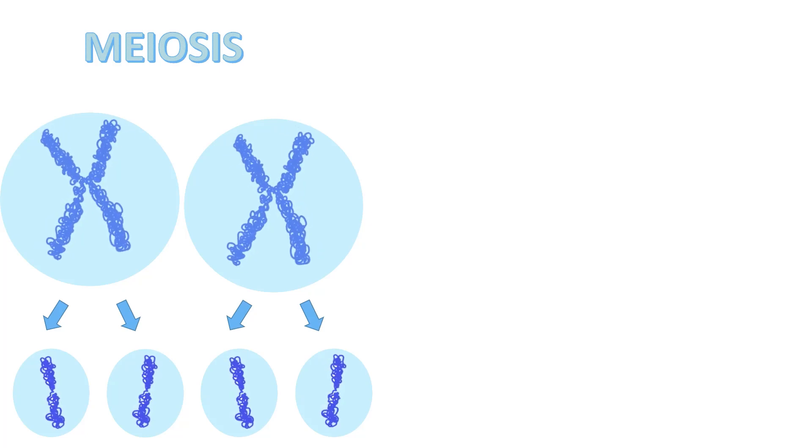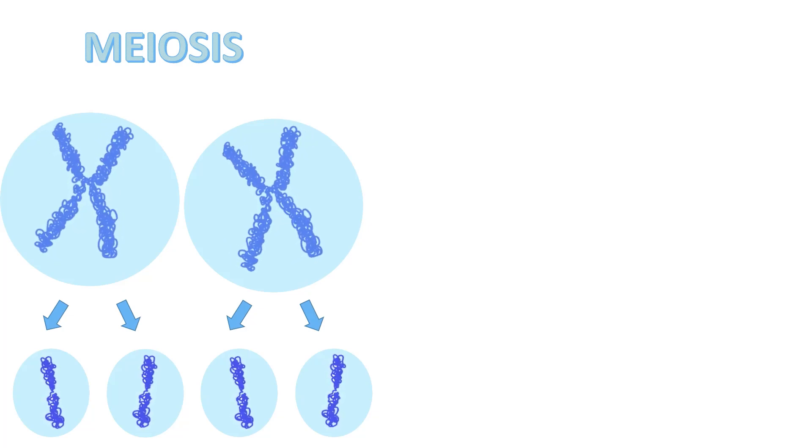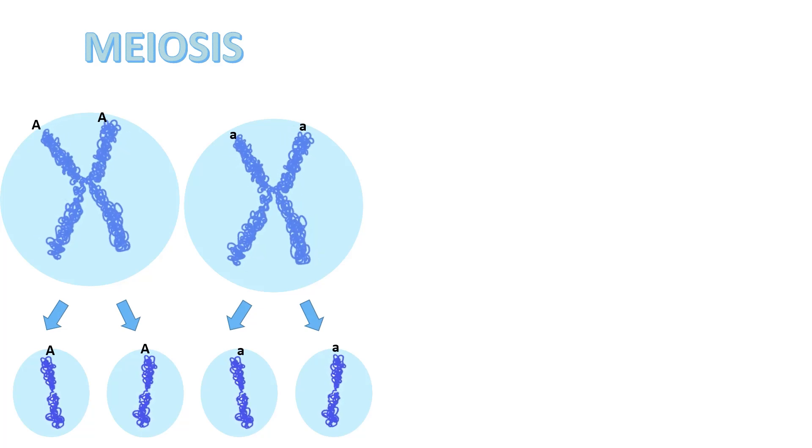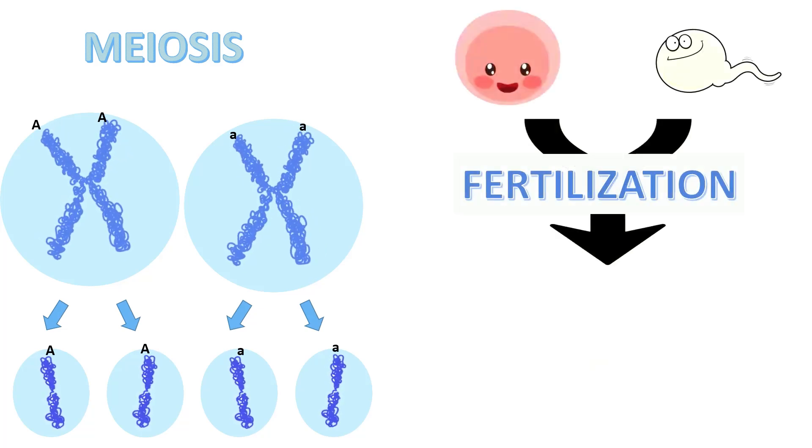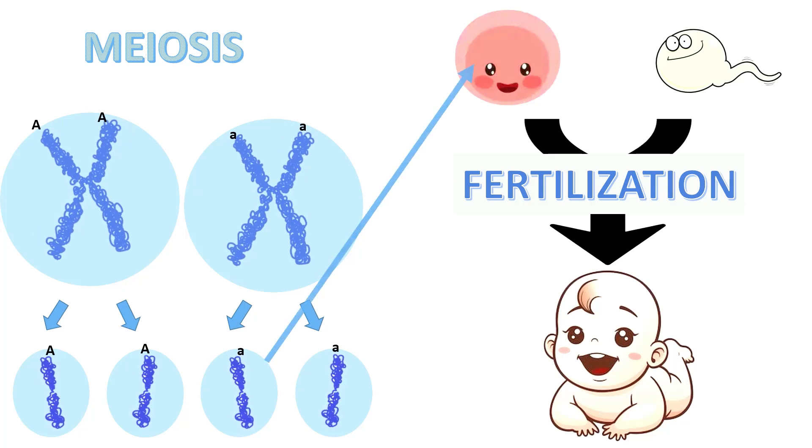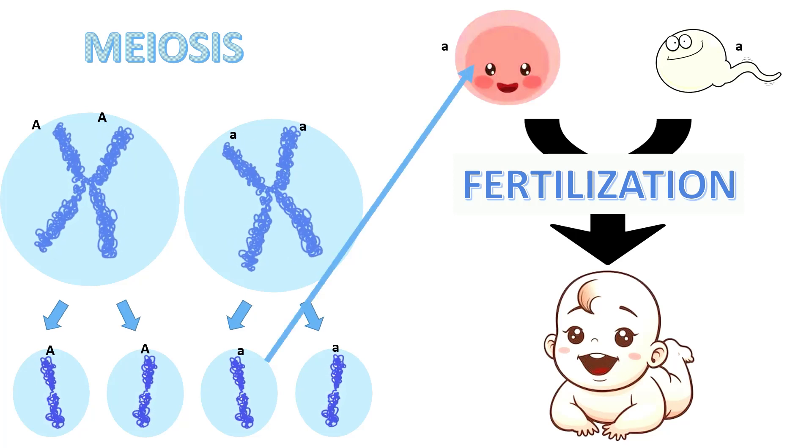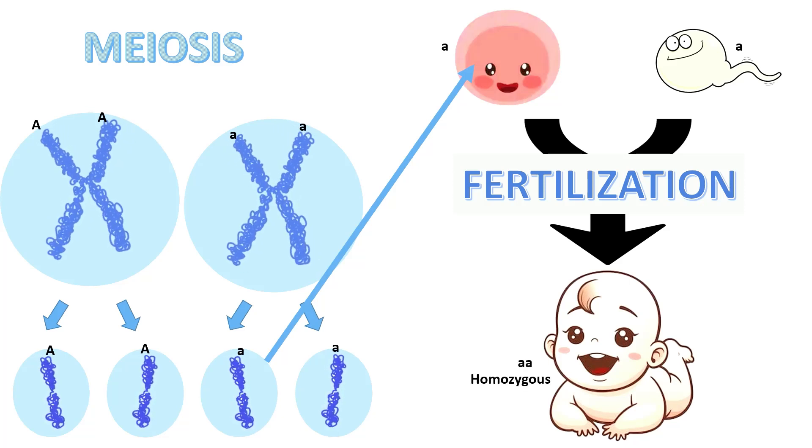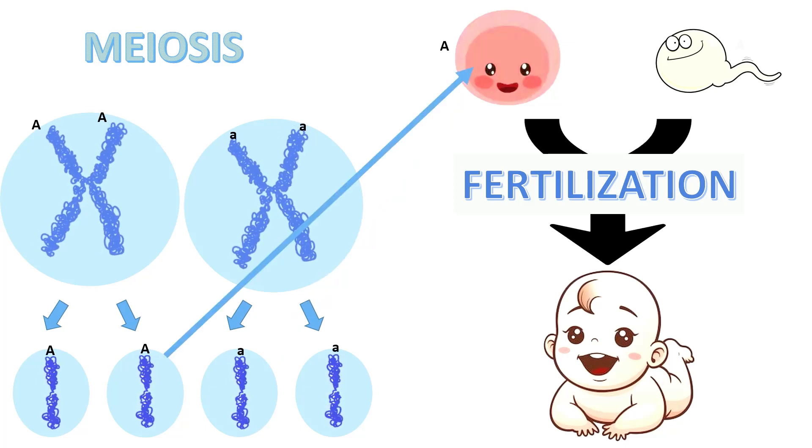Remember that genes have several different versions called alleles. In this case, they are differentiated using capital letter A and small letter a. If we receive the same allele from both parents, like this case, our genotype is considered or classified as homozygous. This is another example.